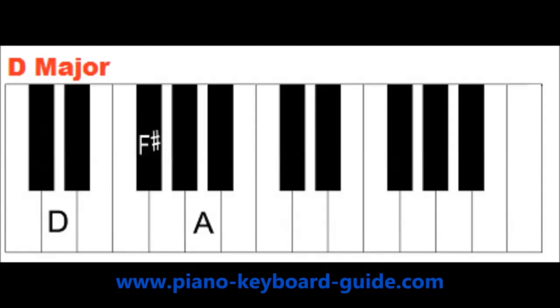The notes of the D chord are D, F sharp, A. And the notes of E minor are E, G, B.